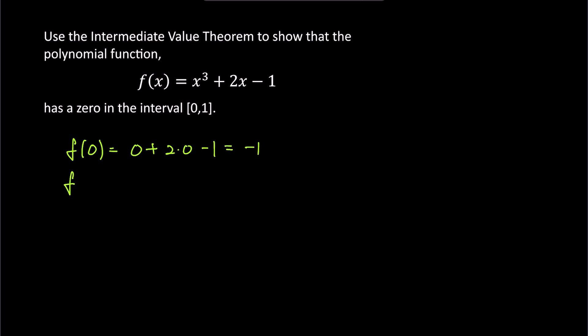And when you plug in 1, we get f of 1 is 1 plus 2 minus 1 equals 2. In other words, this escalator is traveling from the basement floor minus 1 to the second floor continuously without any interruptions within the interval between 0 and 1.